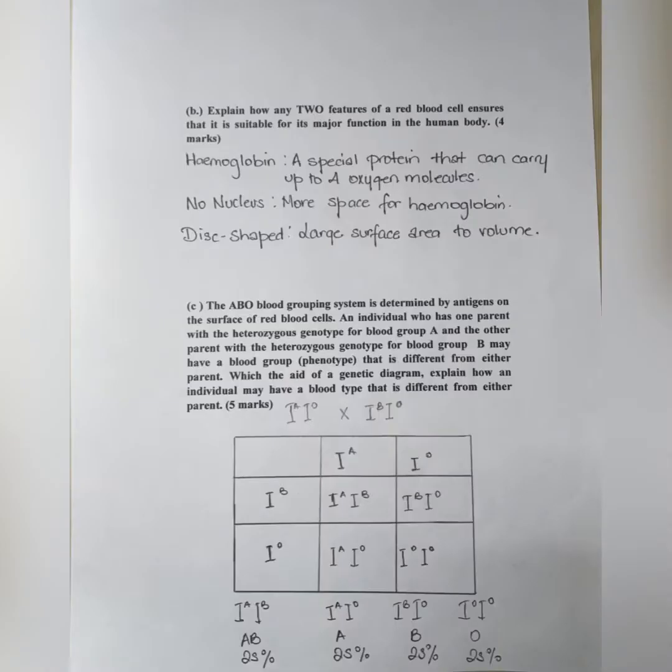Part B says, explain how any two features of a red blood cell ensures that it is suitable for its major function in the human body.